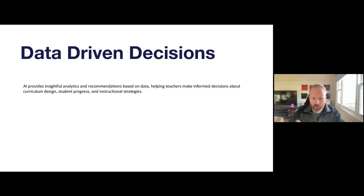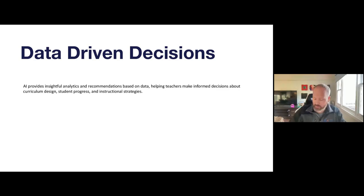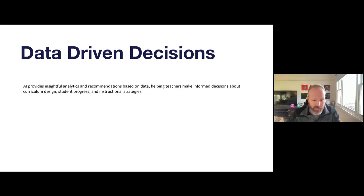The first two areas — efficiency and professional development — we've built solutions for in Connected PE and we'll use them today. The other two — personalization and data-driven decisions — are where we're headed. Things like your school's Google Classroom or learning management tools will be threaded with AI, and that's a certainty. It's operating at Moore's Law exponential rate, so those things will exist very soon.